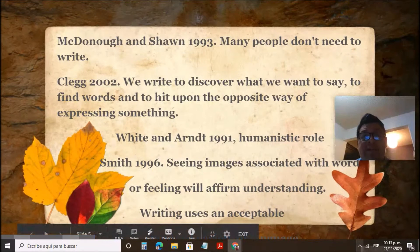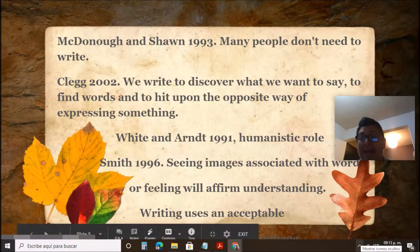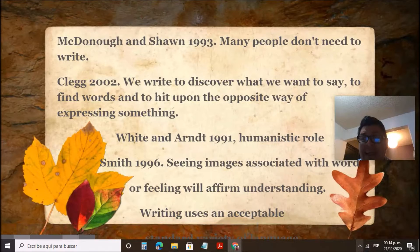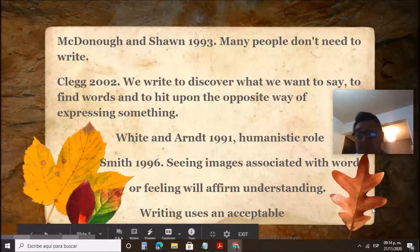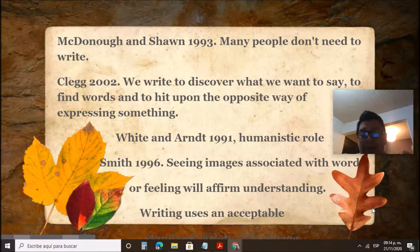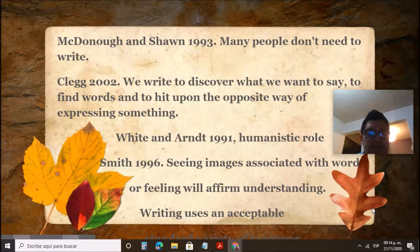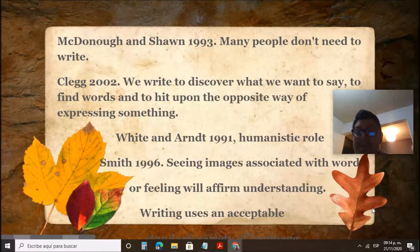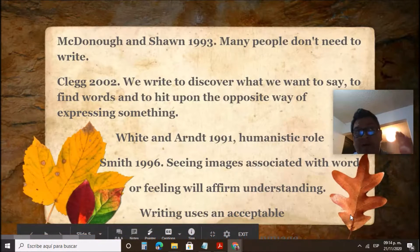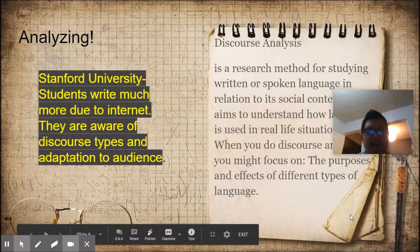McDonough and Shaw in 1983 say many people don't need to write, and that's one of the things that are probably interesting to discuss with students. But again, it's a required skill. Clank 2002 says we write to discover what we want to say, to find words, to find meaning in something. White and Arndt in 1991 say there's a specific humanistic role about writing. And Smith says, what can you do when you see those images that you created and now you see them in writing?